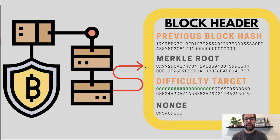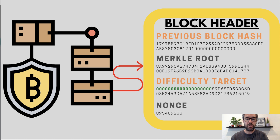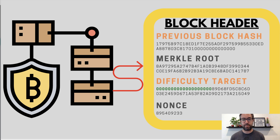Now that we understand hashing, we can talk about what miners are actually doing. When a miner picks up a block, the main part they're concerned about is the block header, which contains all the information they need. The first thing they look for is the previous block hash — that's the fingerprint of the previous block, a hash of everything contained in the previous block's header, and it's what links the blocks together throughout the chain.